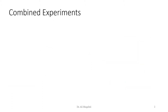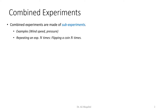Now, what are combined experiments? Basically, combined experiments are made of sub-experiments. For example, you can combine two things: wind speed and wind pressure. You can also do one experiment and then repeat it n times, and this repetition can be combined as combined experiments.